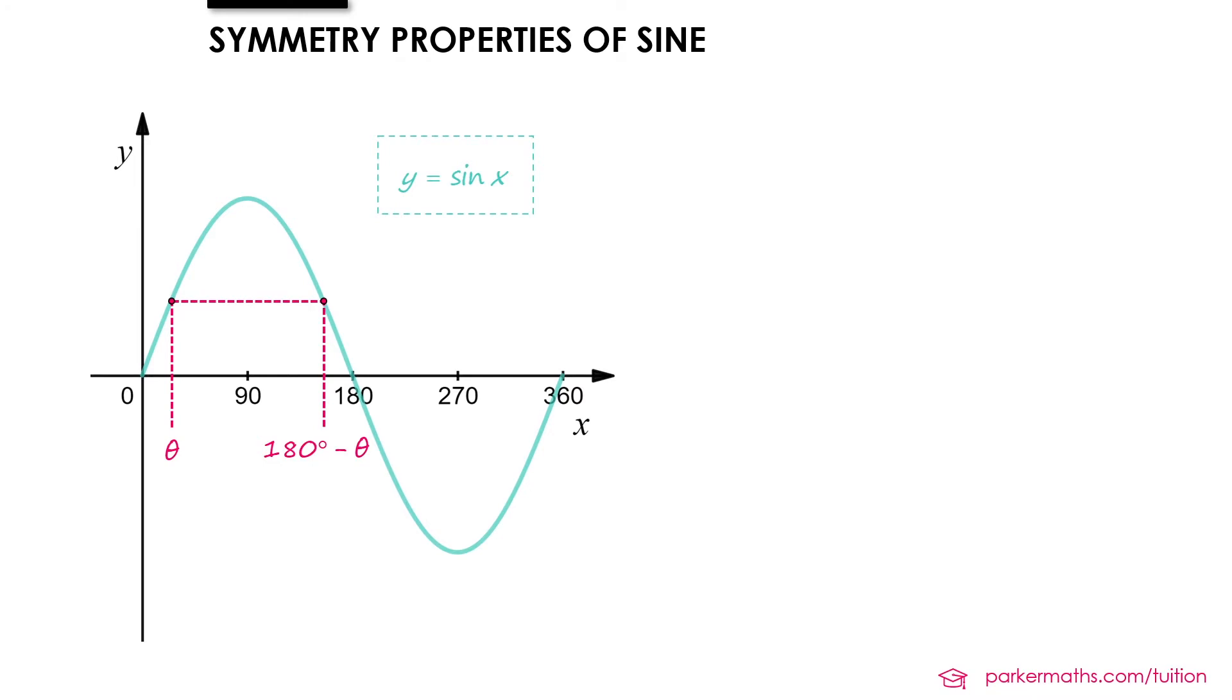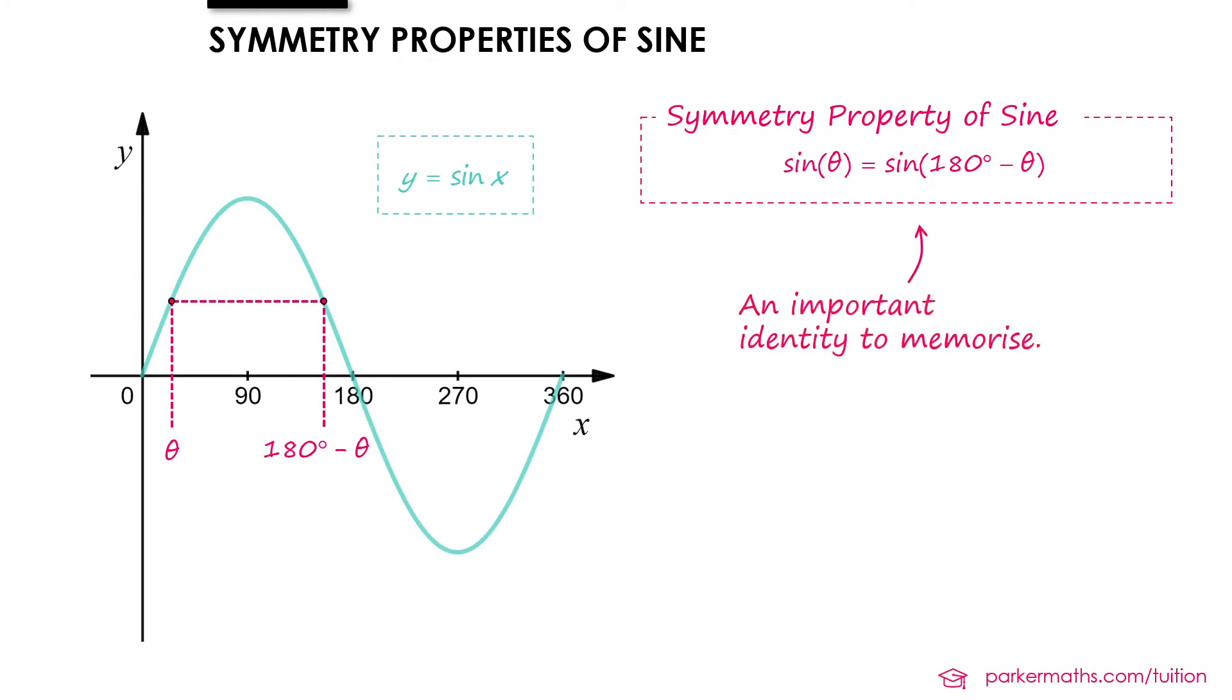And so on the right hand side we have 180 minus theta. And so we can have a more general rule that says sine theta is equal to sine of 180 minus theta. And that works for any value of theta that we can think of. We call it the symmetry property of sine, and it's something we'll use really frequently throughout the course, so it's an important one to memorize.